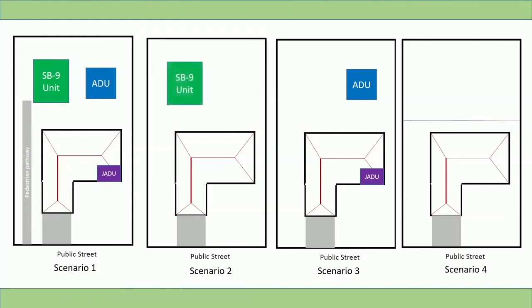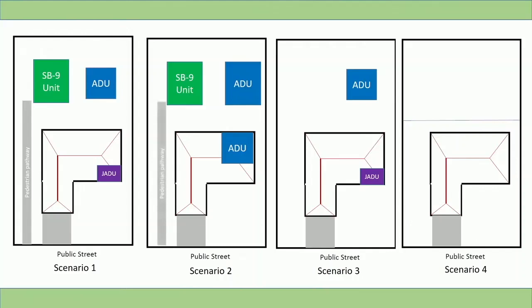In the second scenario, a property developed with one single-family residence could add one SB9 unit plus two ADUs. The two ADUs are possible because with the addition of one SB9 unit, the property becomes a multi-family development and is eligible for two ADUs under state law. Access to the SB9 unit would be from a walking path to the unit's front door, and parking would be in an enclosed garage. In this scenario, the property is not eligible for an urban lot split.